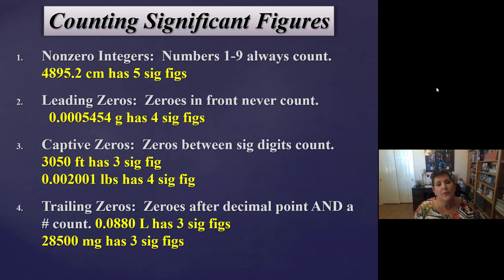Last rule, number four, the zeros at the end. The zeros at the end of a number only count if they're after a decimal point. 0.0880. Okay, the zeros in front never count, so they don't count. The eight and the eight count. The zero at the end is after the decimal point, and it's after the eight, so it counts. So zeros at the end count if they're also after a decimal point. So the eight, eight, and last zero count, three sig figs.